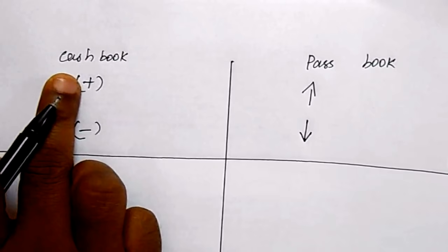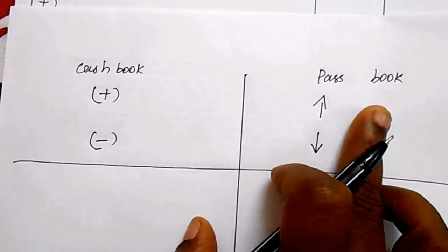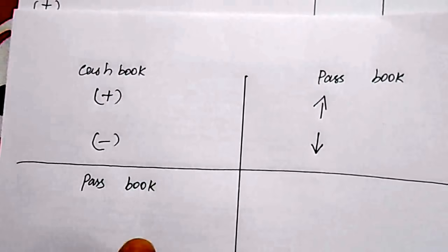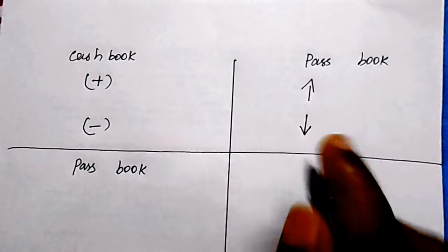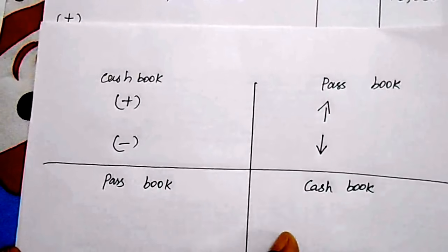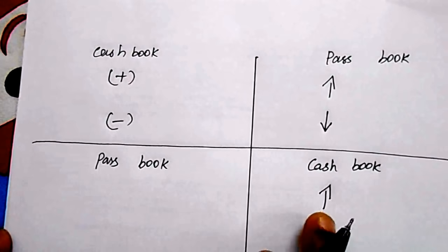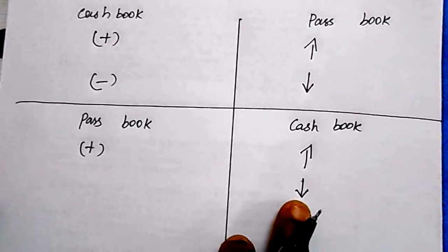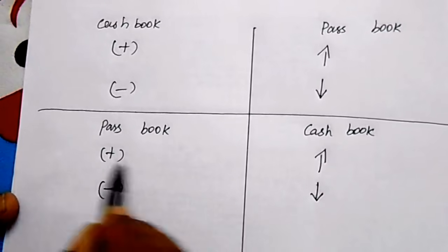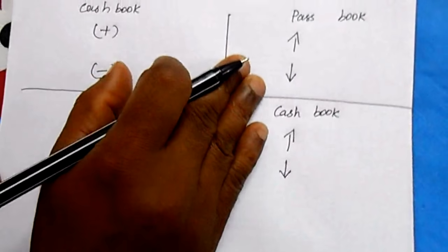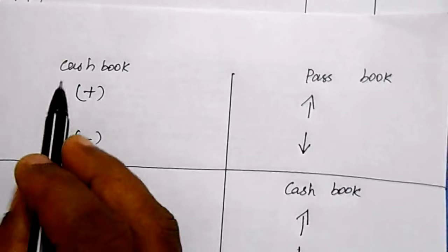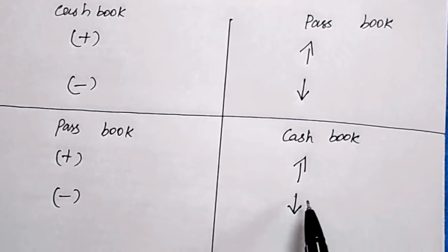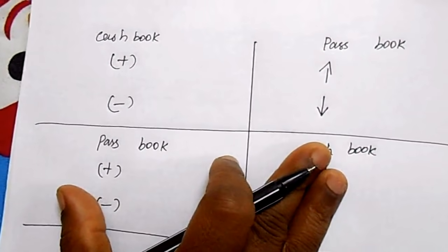When you start with the pass book balance, the reverse applies — concentrate only on the cash book. If a cause increases the cash book balance, add it to the pass book. If it decreases the cash book balance, subtract it from the pass book. This is the same logic in reverse. With this logic you can solve any kind of BRS problem. If you start with cash book, the final answer is pass book balance, and vice versa.